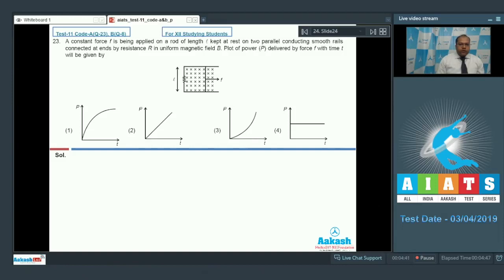So we know that the constant force is applied. So the power is given by F into V. Now the variation of P with respect to time is same as the variation of V with respect to time as F is constant. And we know that in this situation, if I write the differential equation that is F minus BIL or ILB is equal to M into dV by dt.